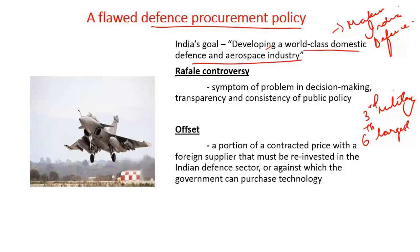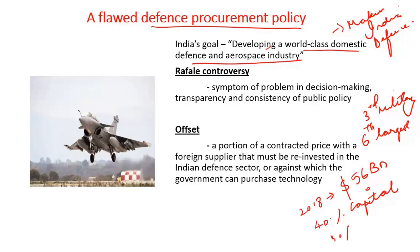A recent survey suggests that by 2018, India's defense expenditure would touch 56 billion US dollars. Of the defense expenditure incurred by the Government of India, 40% is for capital purchases — that is, purchase of new arms, new aircraft, new warships. Of this, only 30% is being procured from public sector defense units, indicating the need for making defense equipment in India.